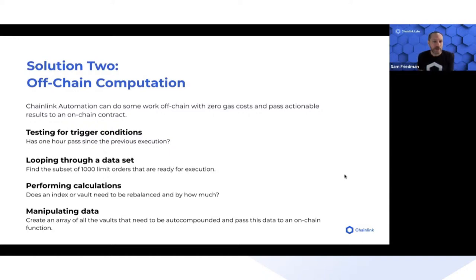It creates a data structure like an array with the index IDs of all the vaults that are ready to be auto-compounded, and then passes that value to an on-chain function.